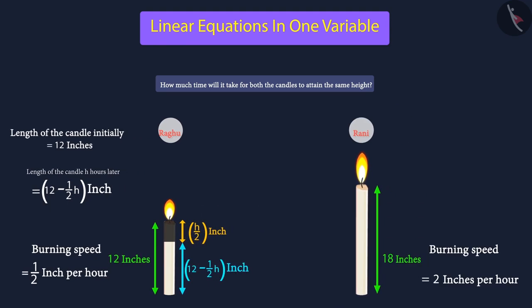The same method will also apply to Rani's candle. We know that Rani's candle was 18 inches in length. It is burning at a speed of two inches per hour. So, we can say that in h hours, Rani's candle will burn two times h inch.